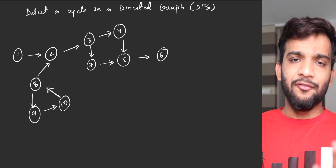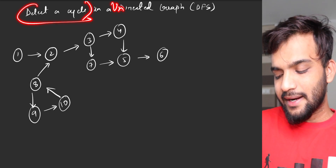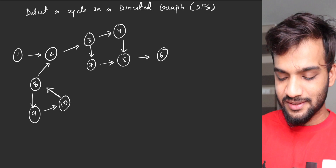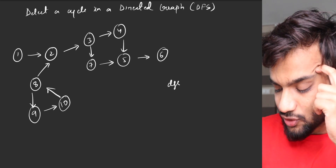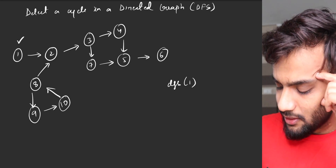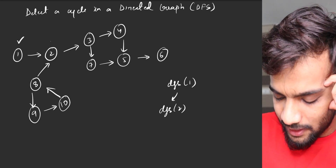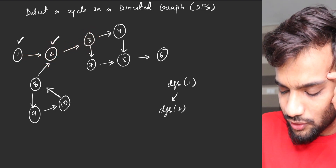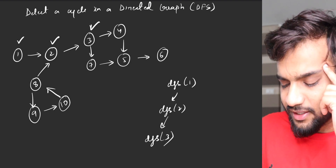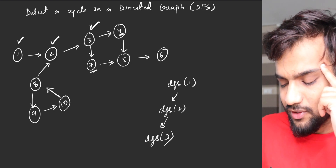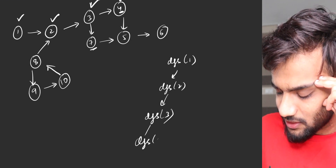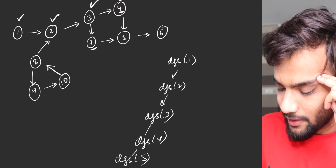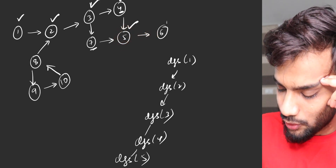We have already solved how to detect a cycle in an undirected graph using DFS, but this is a directed graph. Why will the same algorithm not work? Let's understand. Imagine you start the DFS call from node 1 — mark it visited, go to node 2, mark it visited. Node 2's adjacent neighbor is 3, so go to 3 and mark it visited. From 3 you can go to 4 or 7; let's go to 4, mark it visited.